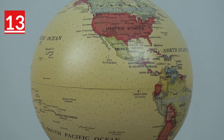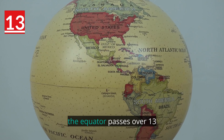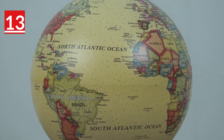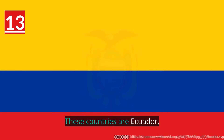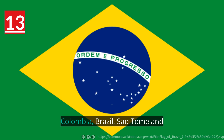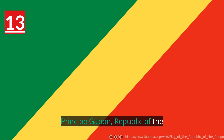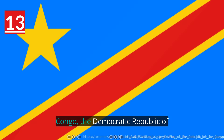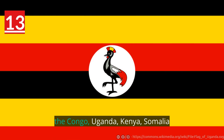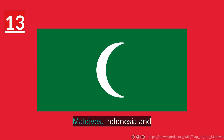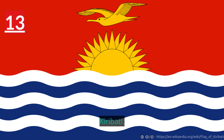Number 13: the equator passes over 13 countries. These countries are Ecuador, Colombia, Brazil, Sao Tome and Principe, Gabon, Republic of the Congo, the Democratic Republic of the Congo, Uganda, Kenya, Somalia, Maldives, Indonesia, and Kiribati.